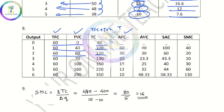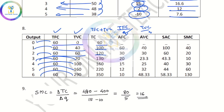AFC equation is TFC divided by quantity. AVC is TVC by Q: 40 by 1, 60 by 2, 70 by 3, 100 by 4, 160 by 5, 220 by 9. Then AFC and SMC.